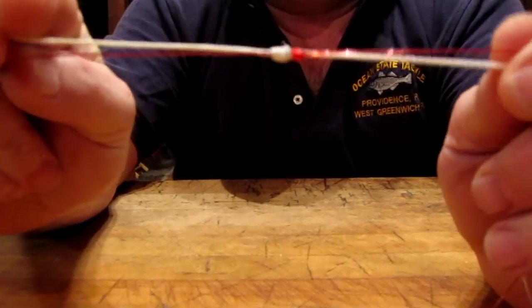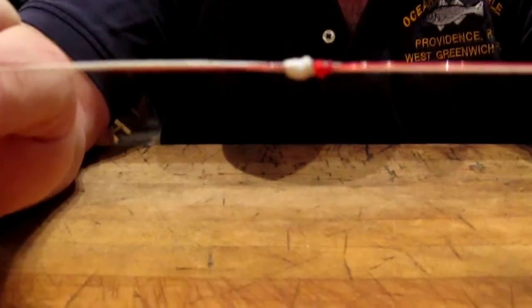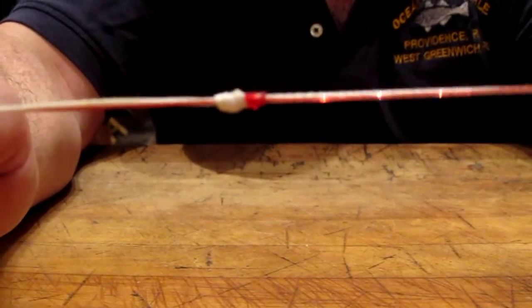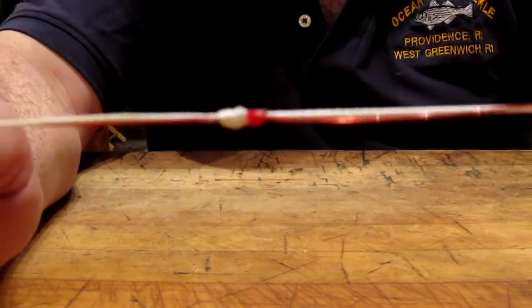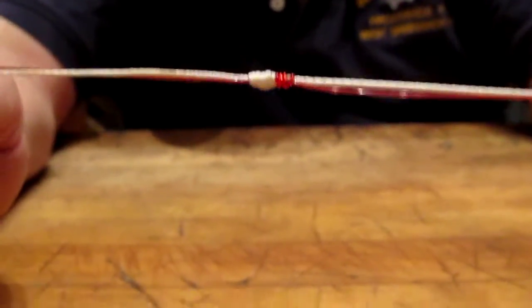You can use this for wind-on leaders. This will go through your guides and your level wind. It retains 85% of the strength of the line. Excellent for a shock leader or any type of leader.